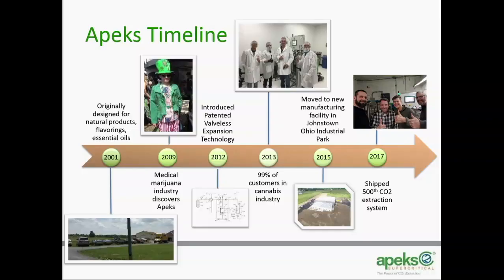I did that originally as a part-time job in my backyard — literally a pole barn. I started Apex Fabrication at the time, and from 2001 until 2009 we built metal botanical oil extraction systems. Most of the applications at the time were essential oils, flavorings, food products, things like that. Somewhere around 2008-2009, the cannabis industry found us.